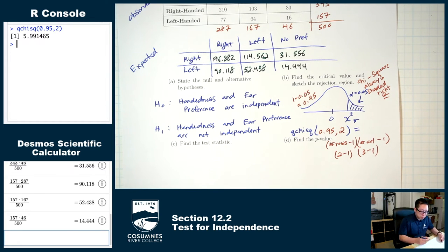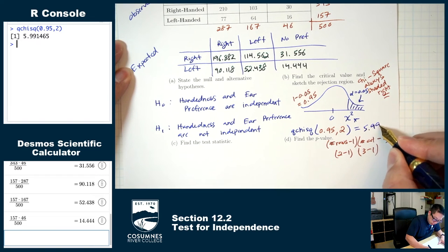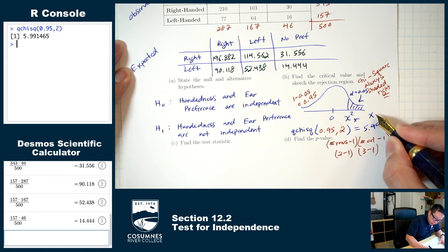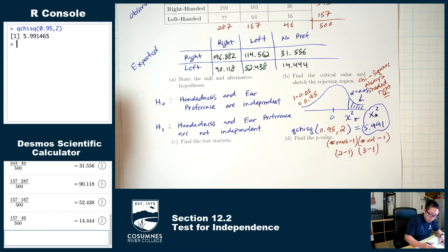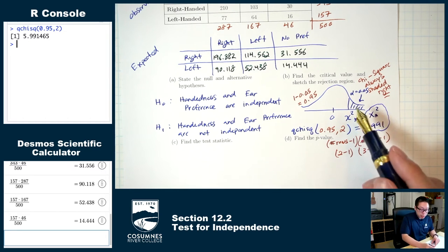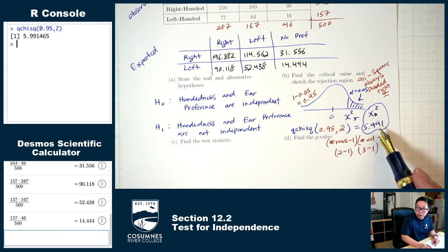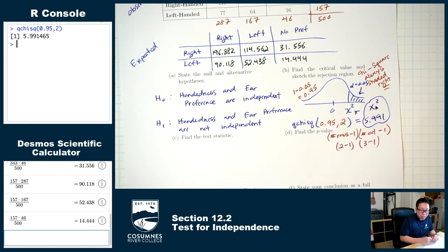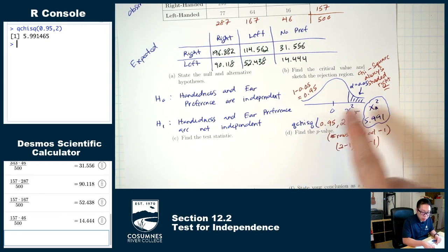The result is chi-square star equals 5.991. Based on the picture, we did expect a positive answer and we got one. If you get a negative answer, chances are you just forgot to do the 1 minus on alpha.